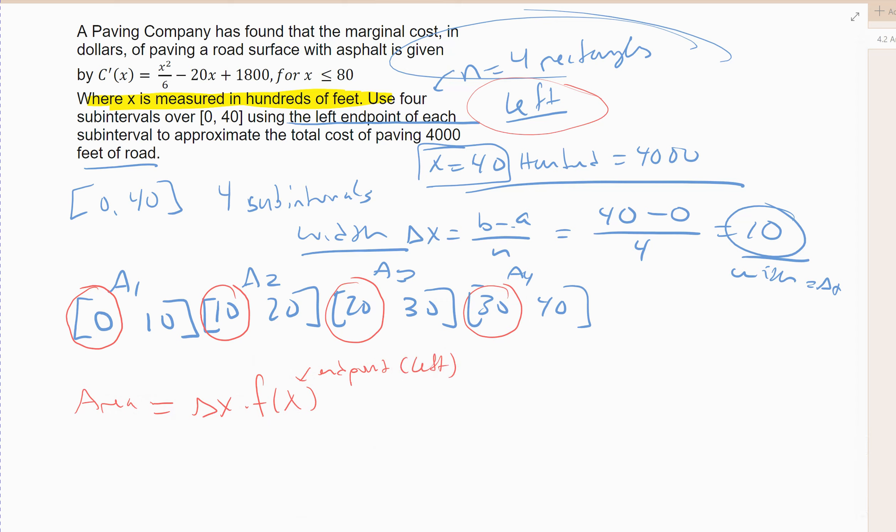Alright, so to approximate my area using the left sum area. Well, my change in x is 10, so it's going to be 10 times. Well, the first area, I'm going to use 0. So c prime of 0 plus 10 times my next area, which would be c prime of 10, and then it would be 10 times c prime of 20. That's the area 1, area 2, area 3, and then area 4 would be 10 times c prime of 30, right?